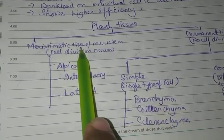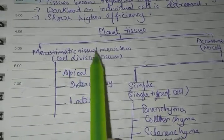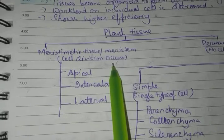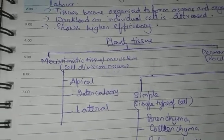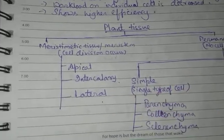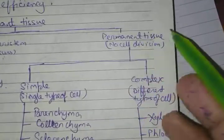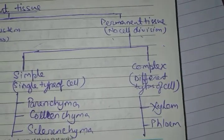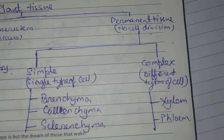So meristematic tissue - here is cell division. Permanent tissue - there is no cell division here.